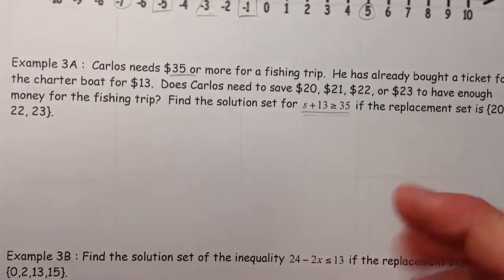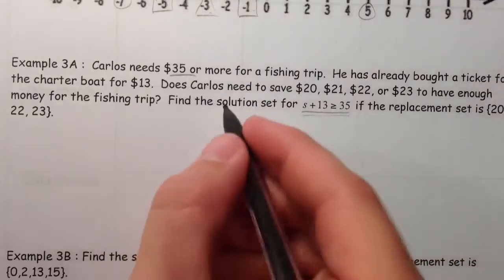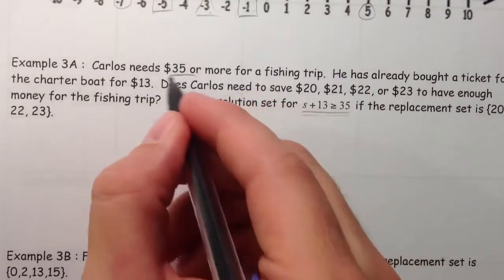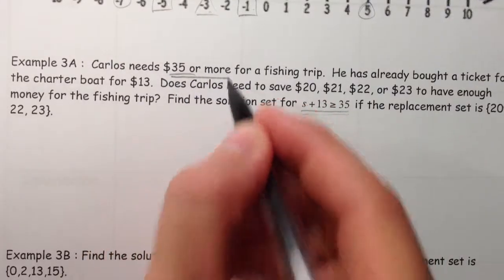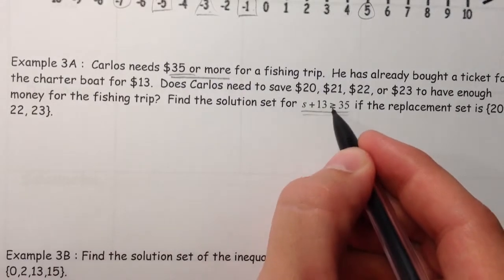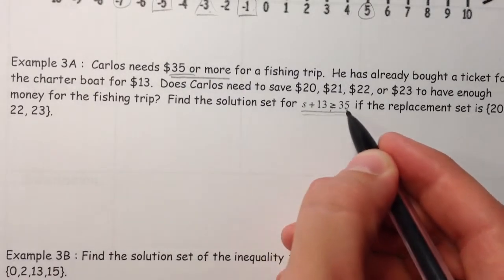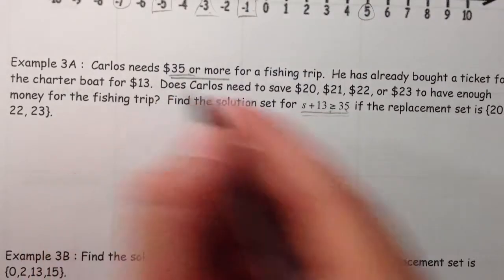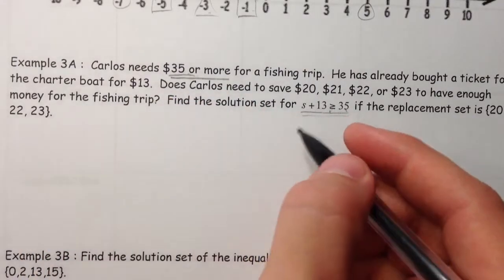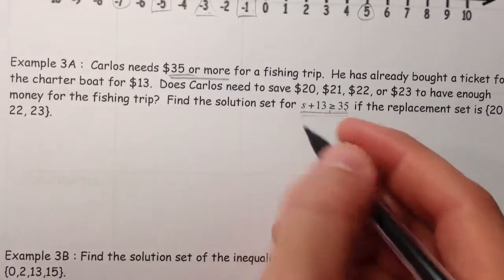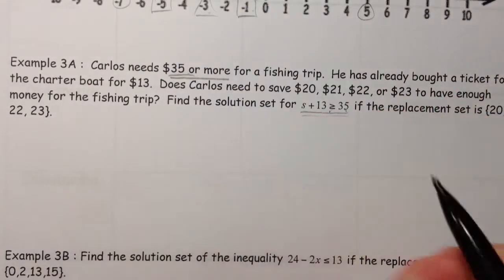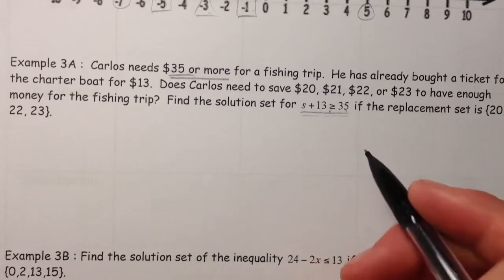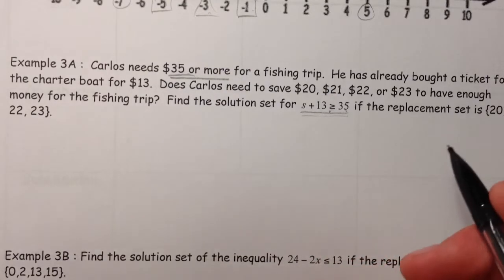And we call it an inequality because it is not equal, but it is something that can have solutions and maybe more than one. Notice that we said Carlos needs 35 or more. And so, it's 35 has to be greater than or equal to 35. It's the 35 or more. And then the 13, he has already in there. And the s stands for how much we need to save. So, we've been able to write this expression here, this inequality statement.